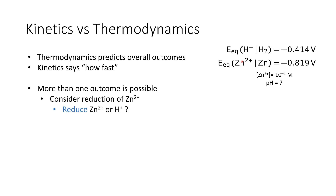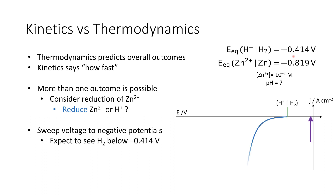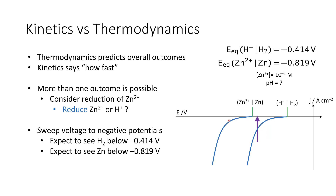If we look at the current-voltage curves and sweep our voltage to negative potential — starting at zero and driving to negative voltages — we would expect to see hydrogen evolution happening once we get to a potential of minus 0.414 volts. As we come into this region, we start to apply the overpotential and would expect to see hydrogen evolution, while zinc would appear if we drive further past the zinc electrode potential. But the result we observe depends fundamentally on the electrode material we're using.